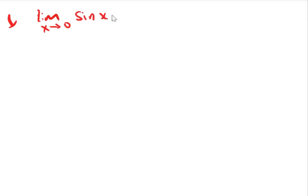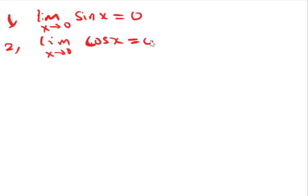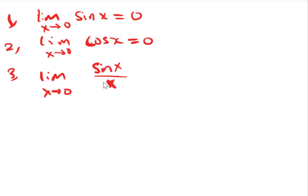Number 1: the limit as x approaches 0 of sin x gives 0. Number 2: the limit as x approaches 0 of cos x also gives 0. But if you have the limit as x approaches 0 of sin x divided by x, this will give you 1.